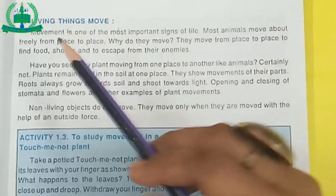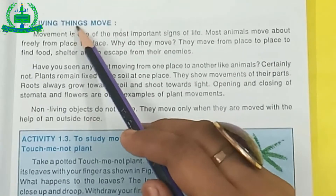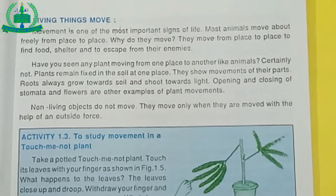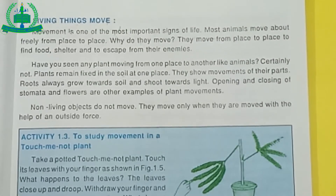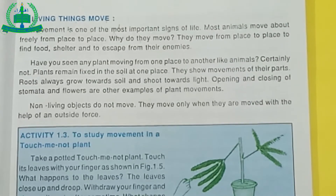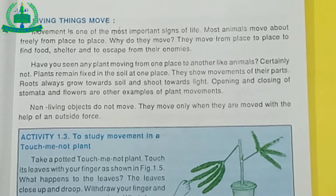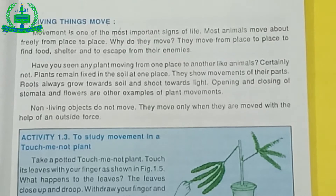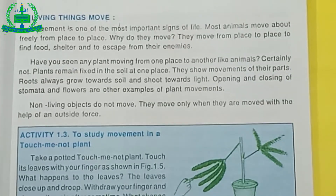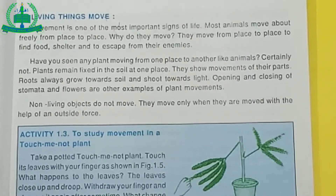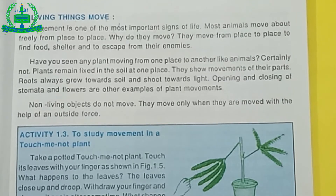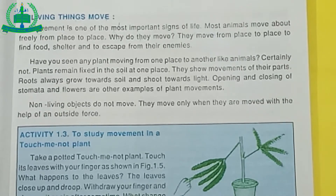The next point is: living things move. All living things can move. Mostly animals can move freely from place to place — they move to find food and shelter. Plants do not move, but they show movement of their parts. For example, roots grow towards soil and shoots grow towards light. However, non-living things do not move.